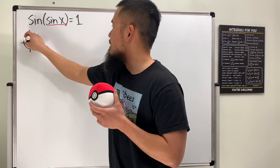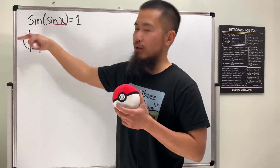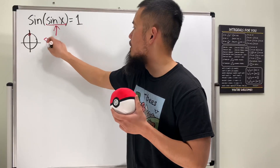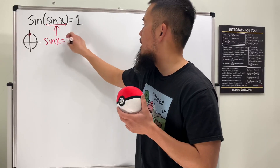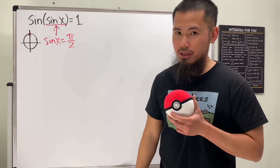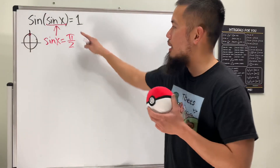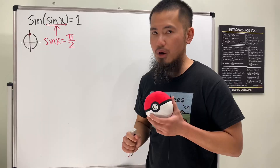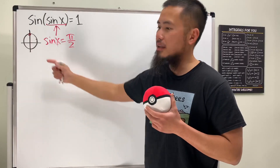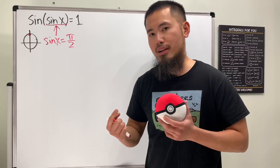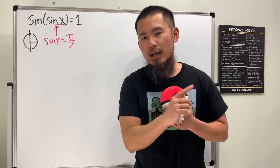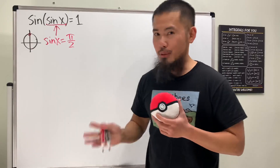On the unit circle, the y-value equals one when the angle is π/2. So the inside must equal π/2. But here's the trouble: π is about 3.14, divided by 2 is about 1.57, and the biggest value sine can produce is one. So in order to solve this, we will have to go into the complex world.